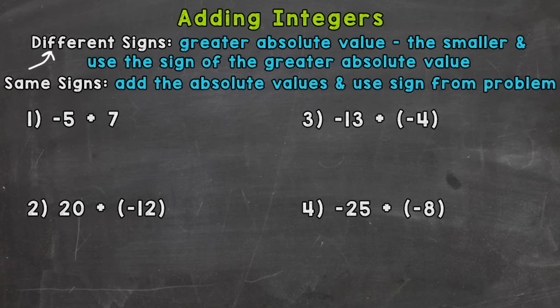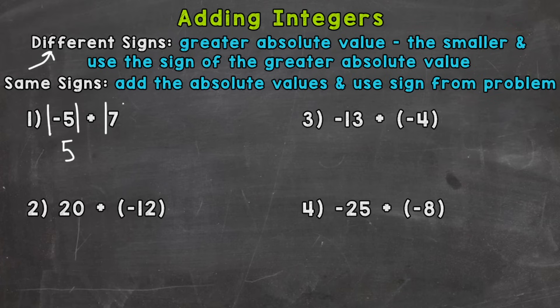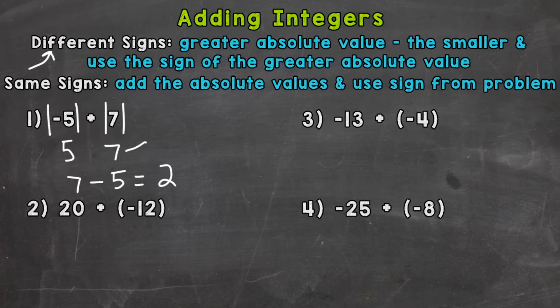So what we need to do is find the absolute value of our integers. Then we'll take the greater absolute value and subtract the smaller absolute value — that's going to give us our answer. We'll use the sign of the greater absolute value for that final answer. Remember, absolute value is the distance from zero. The absolute value of negative five is five, and the absolute value of positive seven is seven. So we take the greater absolute value, which is seven, and subtract the smaller absolute value, which is five. Seven minus five is two. Now we need to use the sign of the greater absolute value, which is this seven. In the original problem, it's a positive seven, so our answer is a positive two.